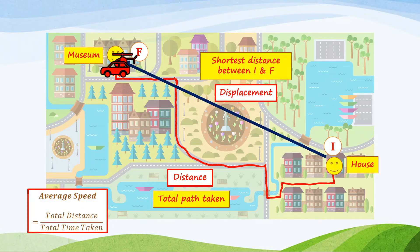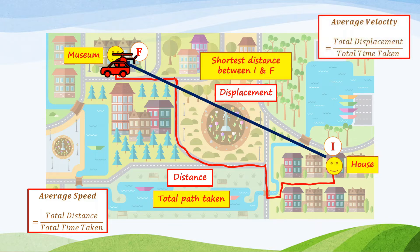Average speed is the total distance divided by total time taken. Average velocity is the total displacement divided by the total time taken. The difference between average speed and average velocity is that average speed uses the longer path, which is the distance, whereas average velocity uses the shortest distance between initial and final point, which is the displacement.